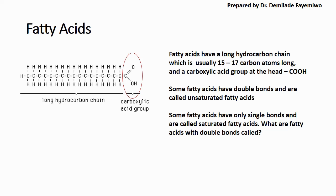This hydrocarbon chain is saturated. We say it's saturated because all the possible bonds for carbon have been formed. Carbon is able to form four bonds in total, and every carbon atom in this chain has four bonds attached to it. That means it is saturated because it doesn't have a double bond anywhere in it.